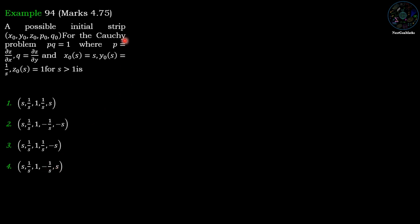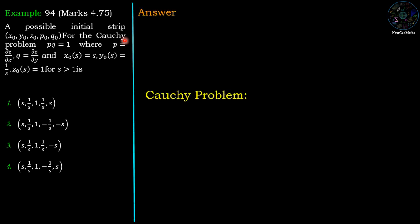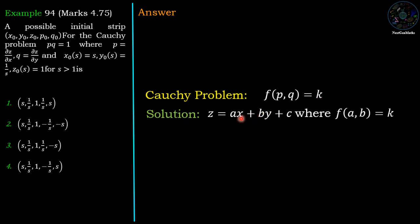This is a Cauchy problem, so first we recall the Cauchy problem for the partial differential equation f(p, q) = k. Its solution is z = ax + by + c where f(a, b) = k. If we replace p = a and q = b, we get the condition f(a, b) = k.